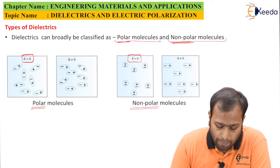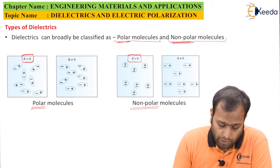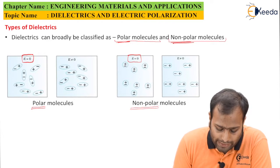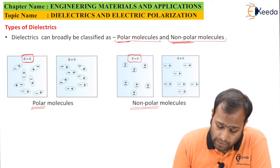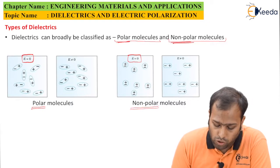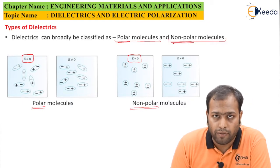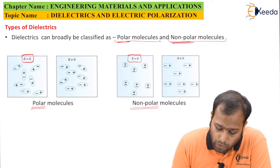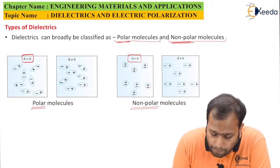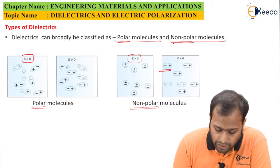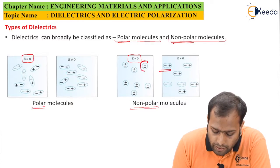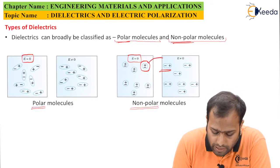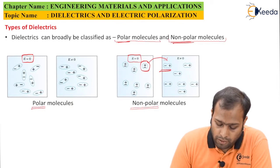What will happen if I turn on the electric field? The polar molecules would get aligned towards the electric field, and the non-polar molecules will also get aligned. The difference is that in non-polar molecules, the separation between the charges increases — initially there was no separation between plus and minus, but now the separation has increased.